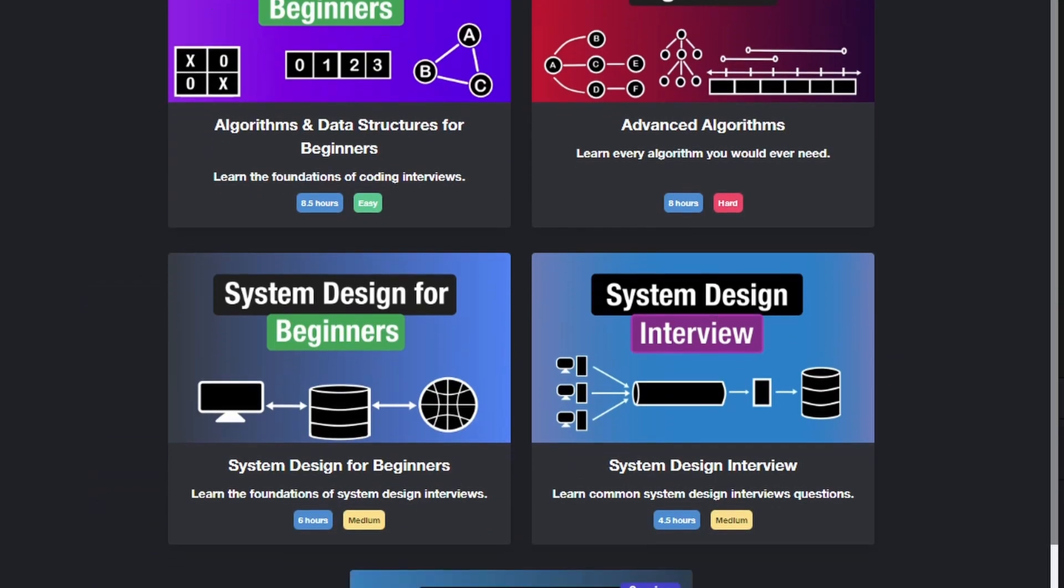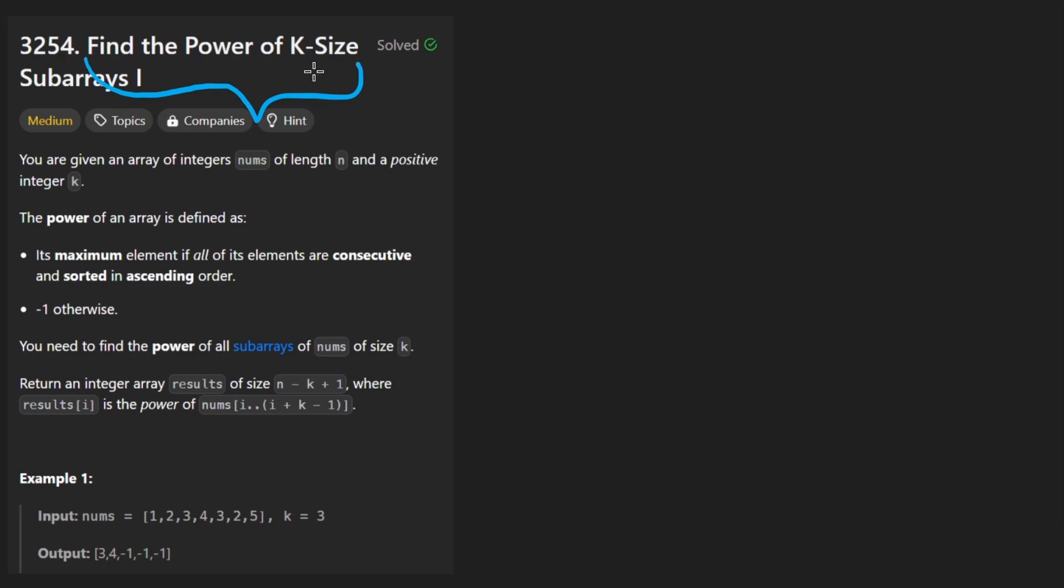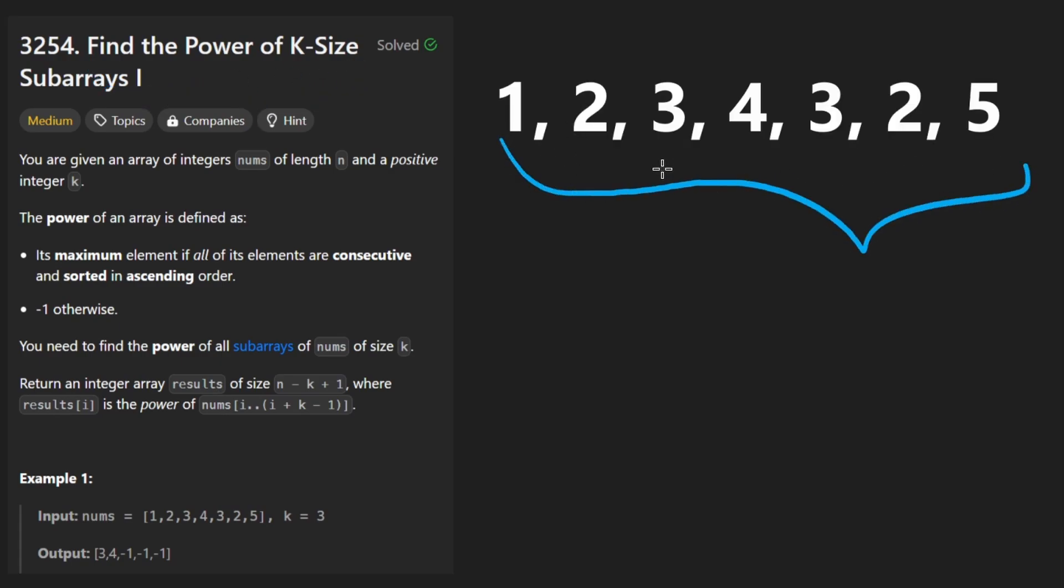Hey everyone, welcome back and let's write some more neat code today. So today let's solve the problem: find the power of k-size subarrays. We're given an array of positive integers, and we're also given a positive integer k, which is a bit more relevant. For this example, let's say it's equal to 3.